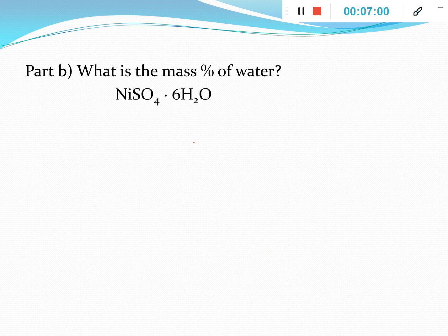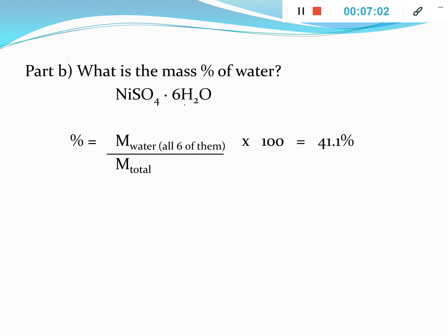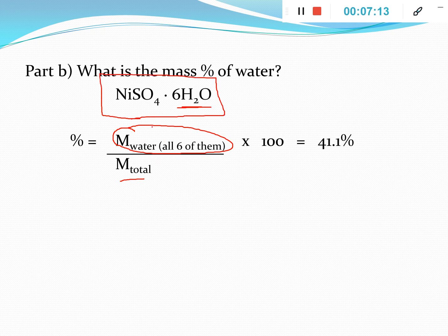If we want to know the percent water, we know there are 6 waters in the formula. Find the molar mass of all 6 waters — 6 × 18.02 g/mol — and divide by the molar mass of the whole hydrated compound (nickel(II) sulfate plus 6 waters). Multiply by 100 to get the percentage. This works out to approximately 41.1% water, which makes sense since there is quite a lot of water in this hydrate.